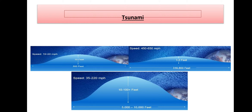Next is tsunami. A tsunami is a sea wave of local or distant origin that results from large-scale sea floor displacement associated with large earthquakes, major submarine slides, or exploding volcanic islands.